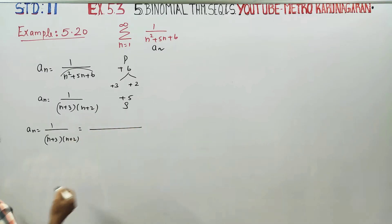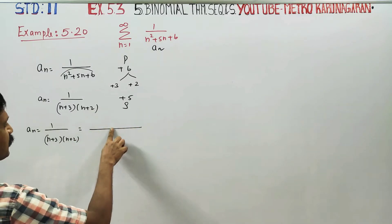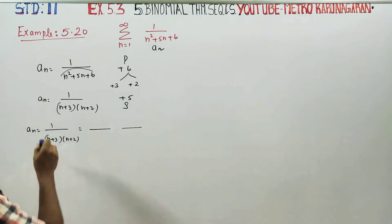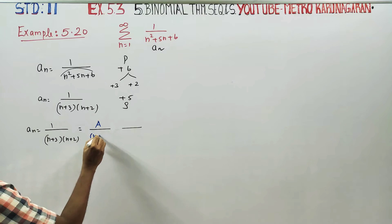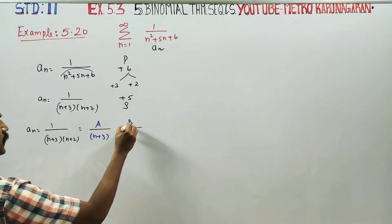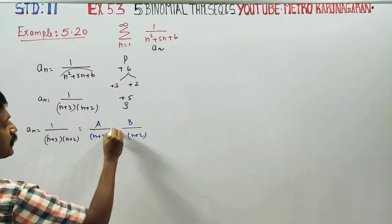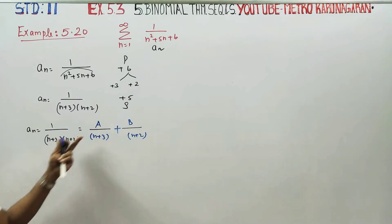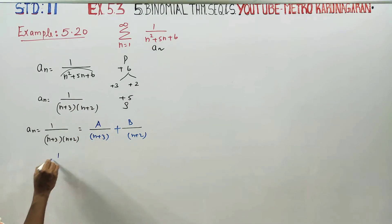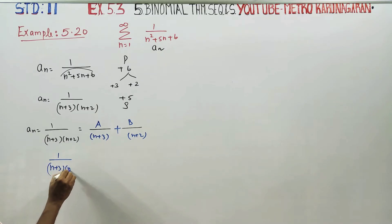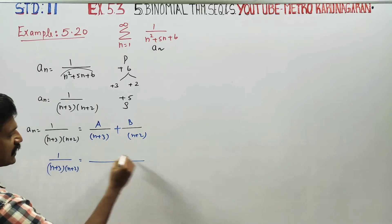Partial fractions — what do we do with partial fractions? We decompose the fraction as a by (n+3) plus b by (n+2). So 1 by (n+3)(n+2) equals a by (n+3) plus b by (n+2).